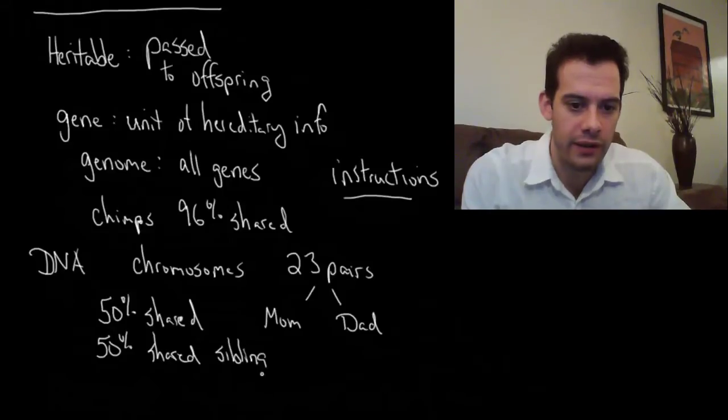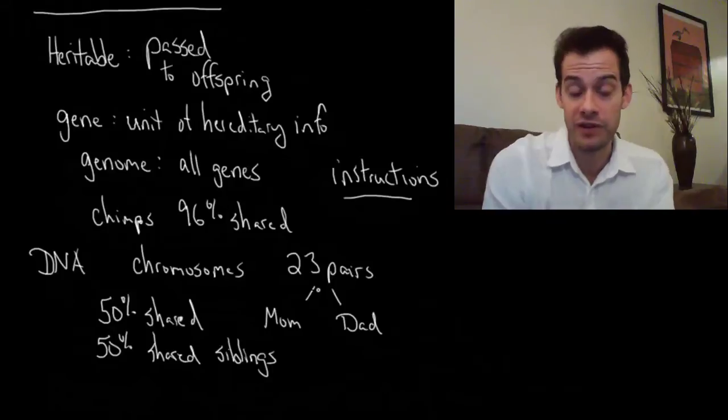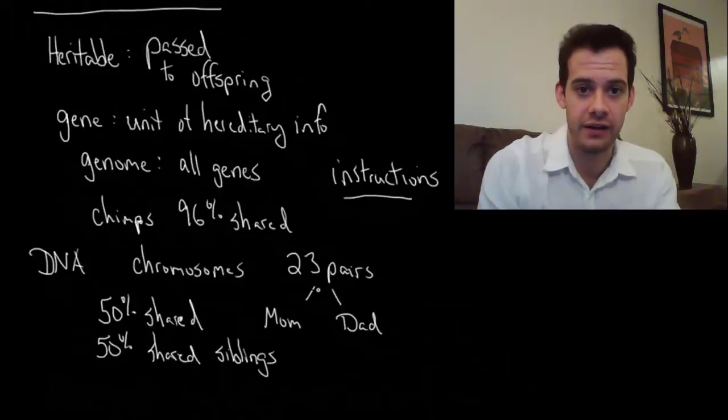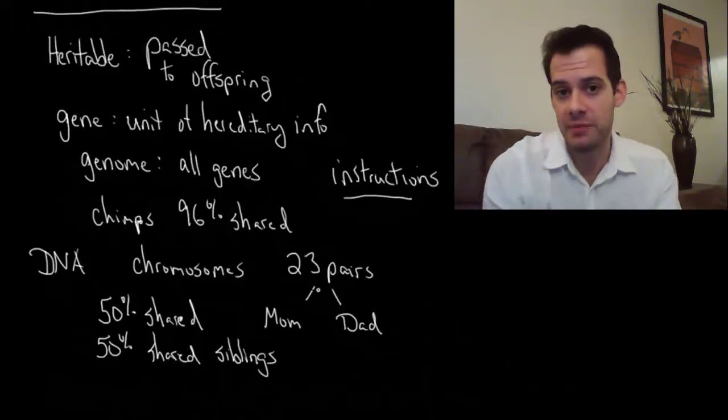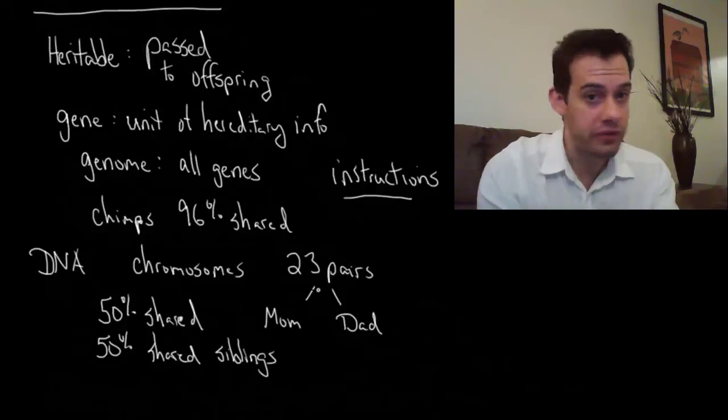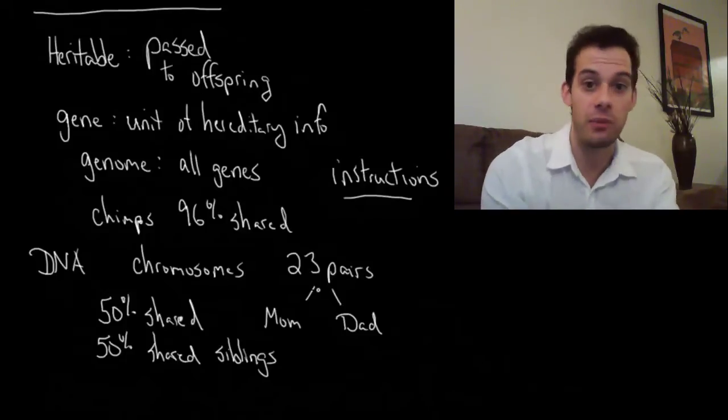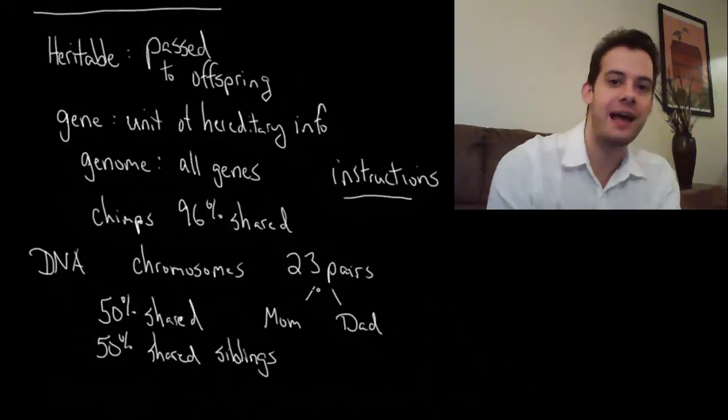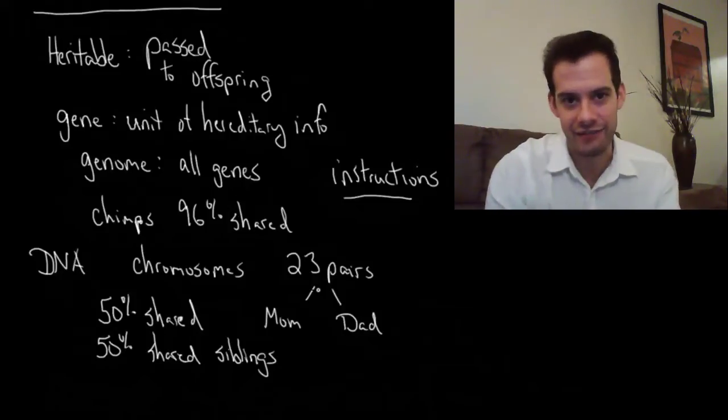How does that work? Well this is an average. If we're talking about a particular gene we say you can either get the mom version of the gene or the dad version of the gene. Your sibling the same is true. They can either get the mom version or the dad version. So sometimes you both get the mom version. Sometimes you both get the dad version. Sometimes you get the dad version they get the mom version. Sometimes you get the mom version they get the dad version.